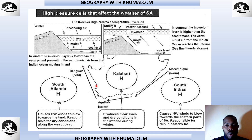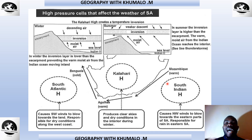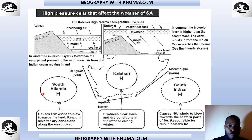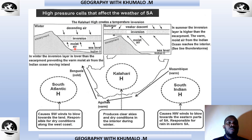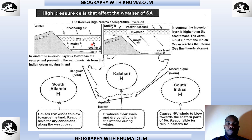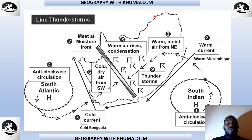Take note of the ocean currents: the cold Benguela and the warm Mozambique and Agulhas currents. These pressure cells circulate anti-clockwise and push air from the ocean towards the land and into the interior of South Africa. We must not forget the inversion layer — it shifts above a certain level in summer and below it in winter. Understanding the definition of the inversion layer will be a level-one exam question.